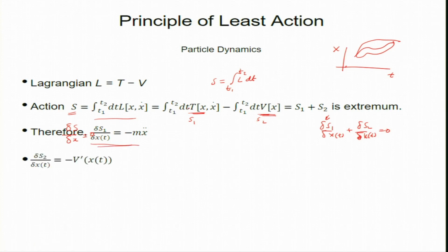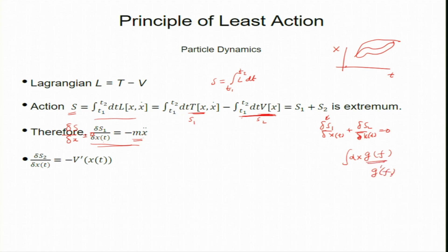We have already computed δS₁/δx = −mẍ (with the τ → 0 limit). For δS₂/δx, since V is a function of x only, using the formula for g(f), the functional derivative is simply V′(x) = dV/dx. Note: δ here denotes the functional derivative, not the ordinary derivative d.